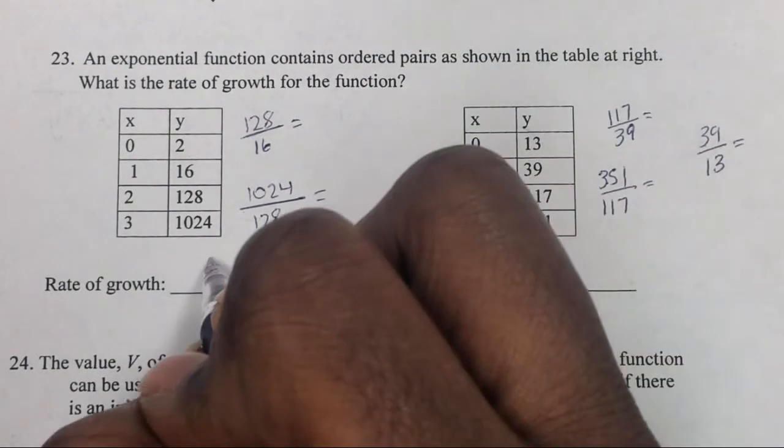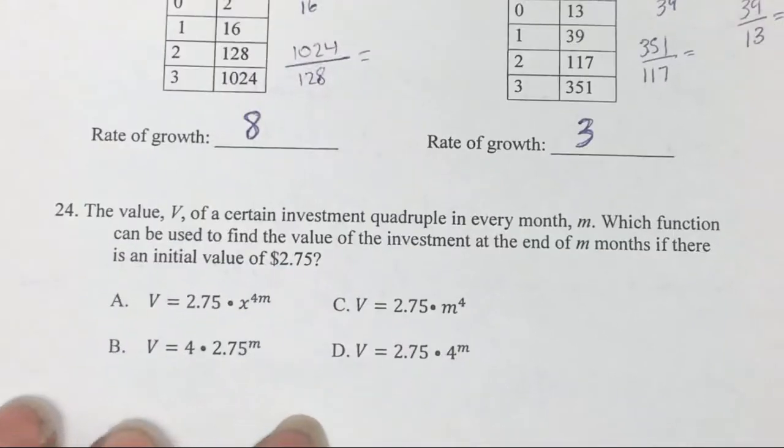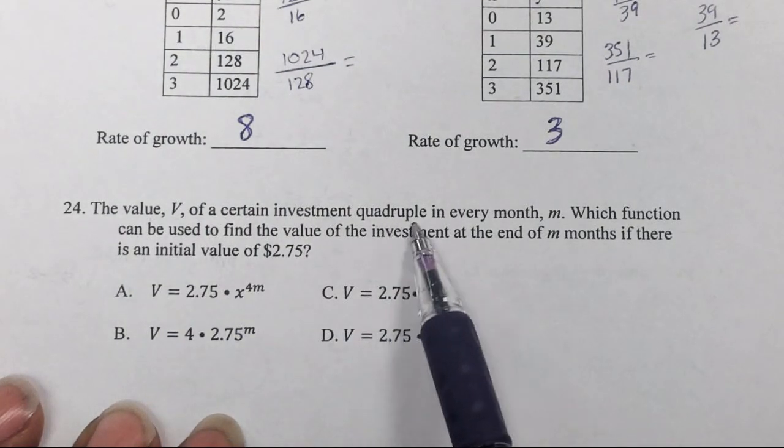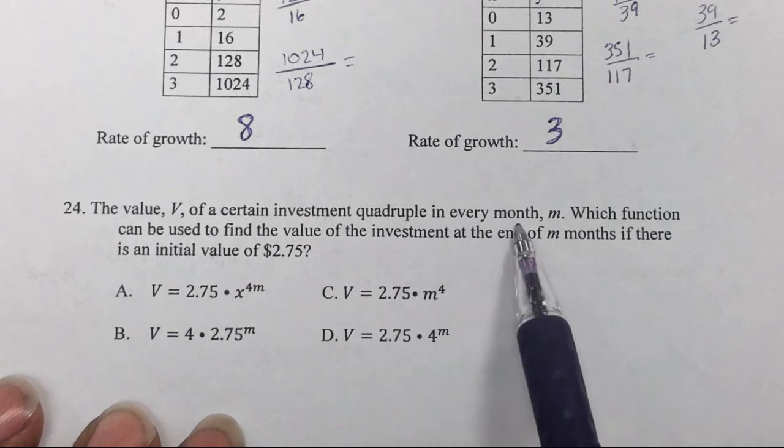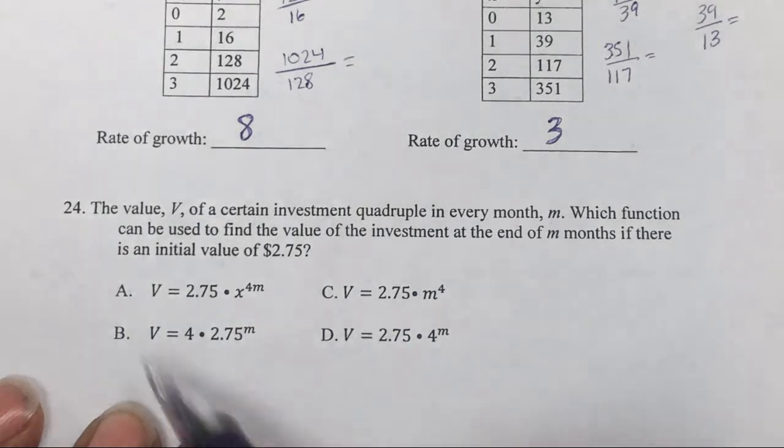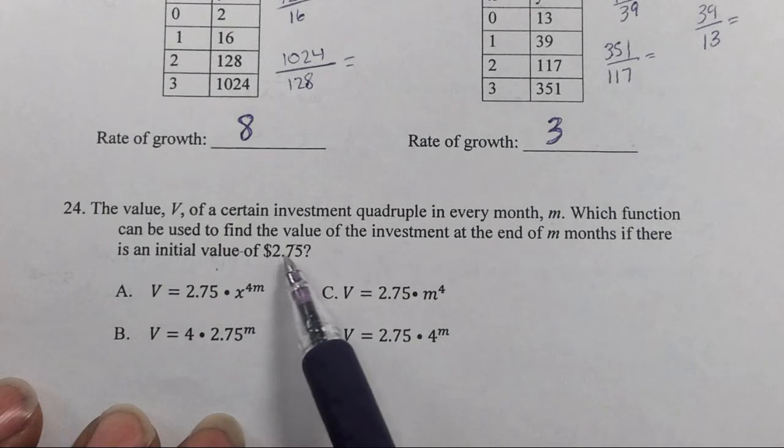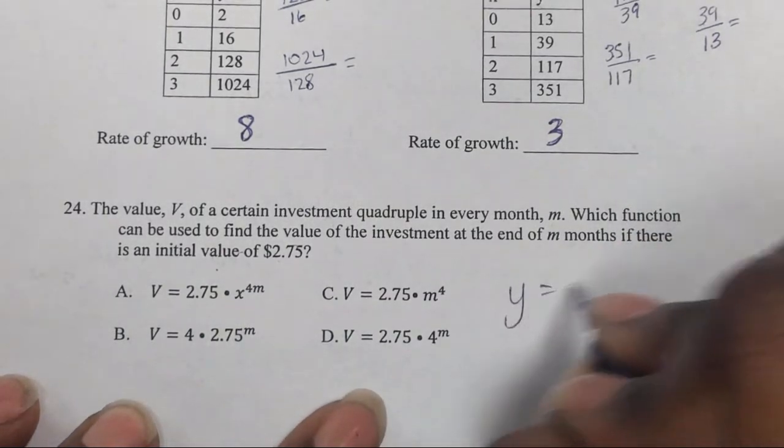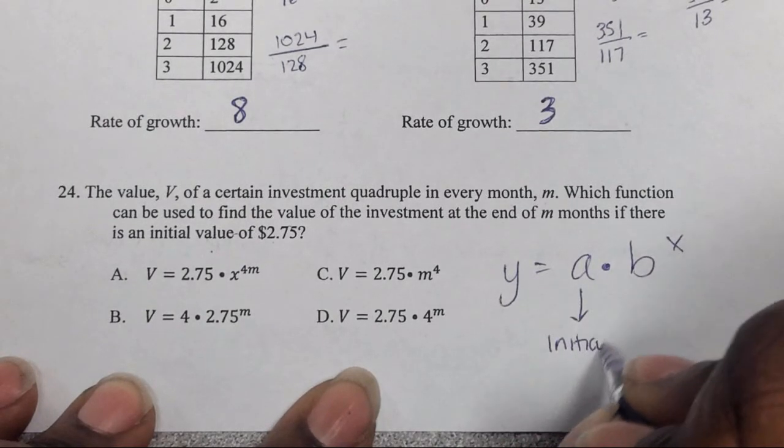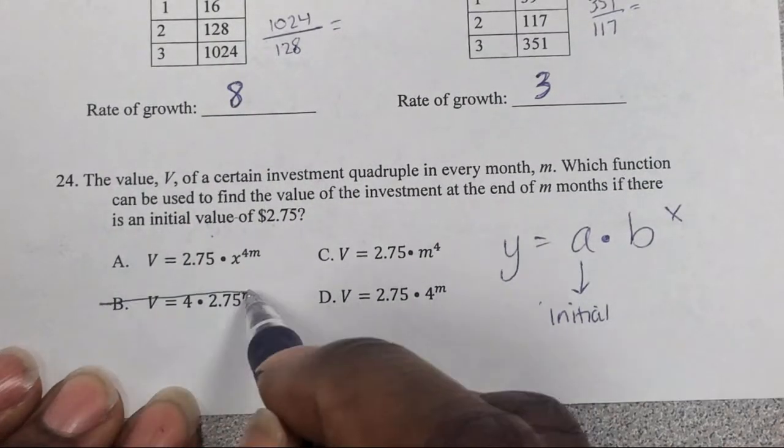That's definitely the rate of 3. And this one is 8. And the last one: the value V of a certain investment quadruples in every month M. You got to know what quadruple means. Which function can be used to find the value of the investment at the end of M months if there is initial value of 2.75?